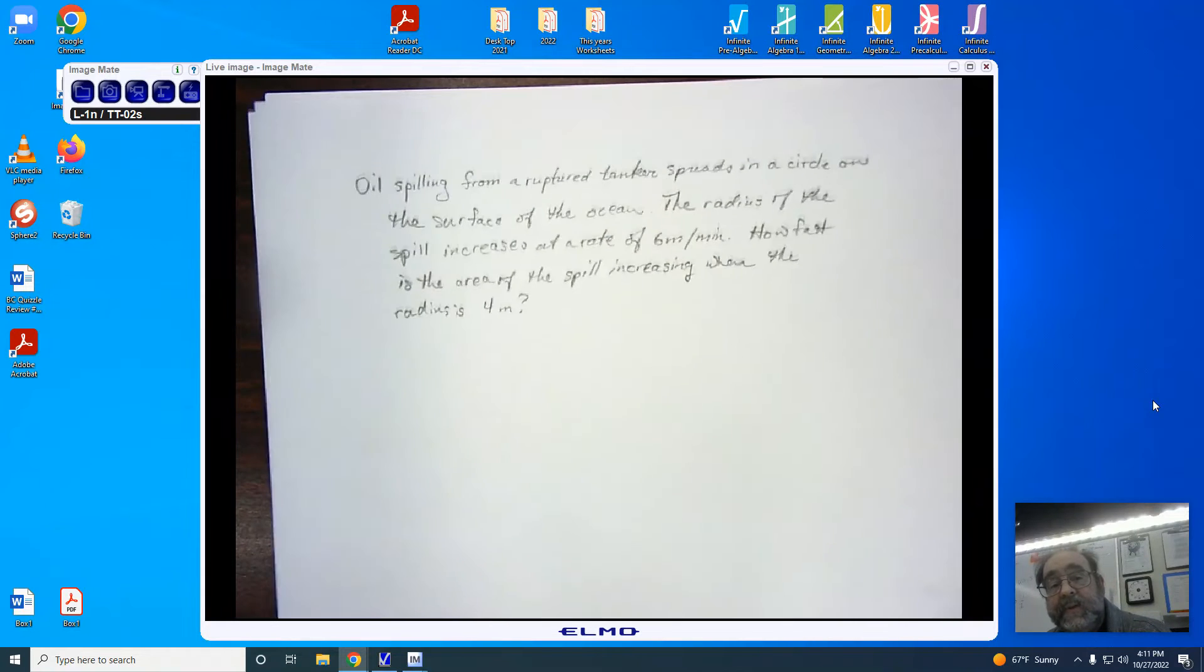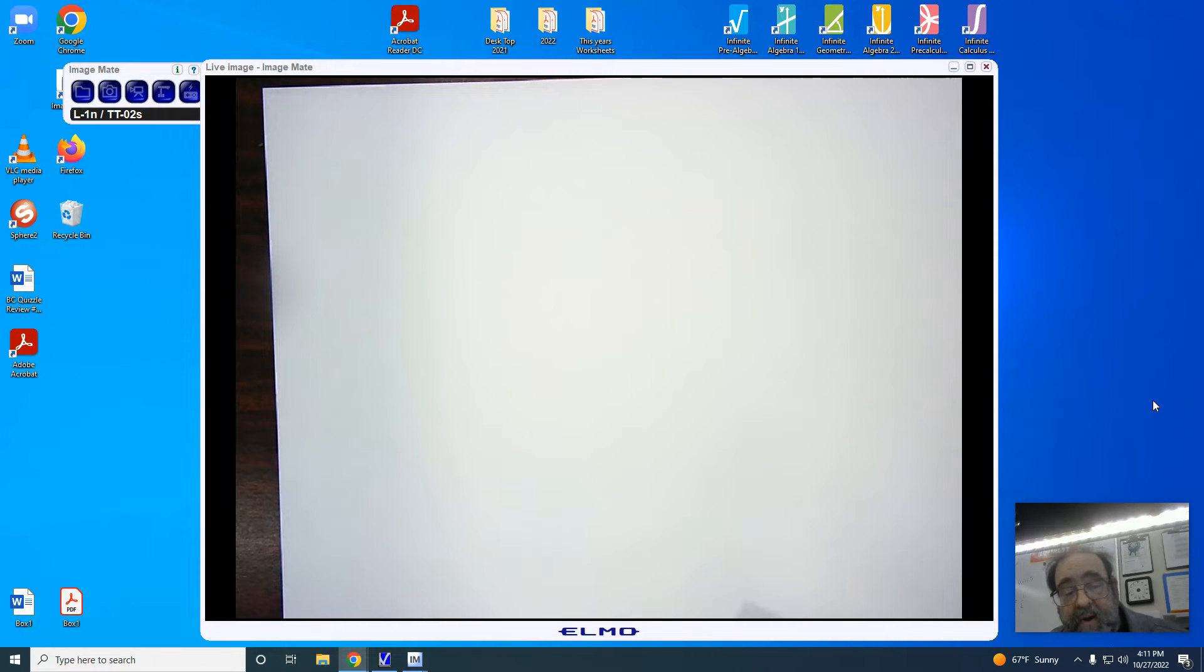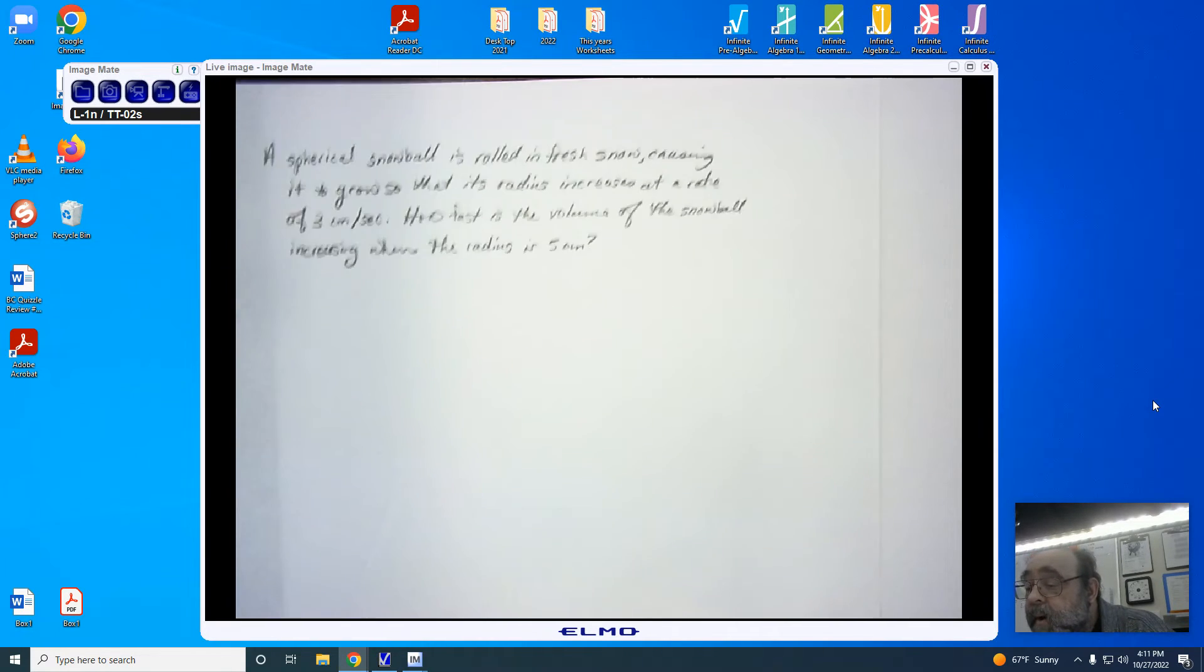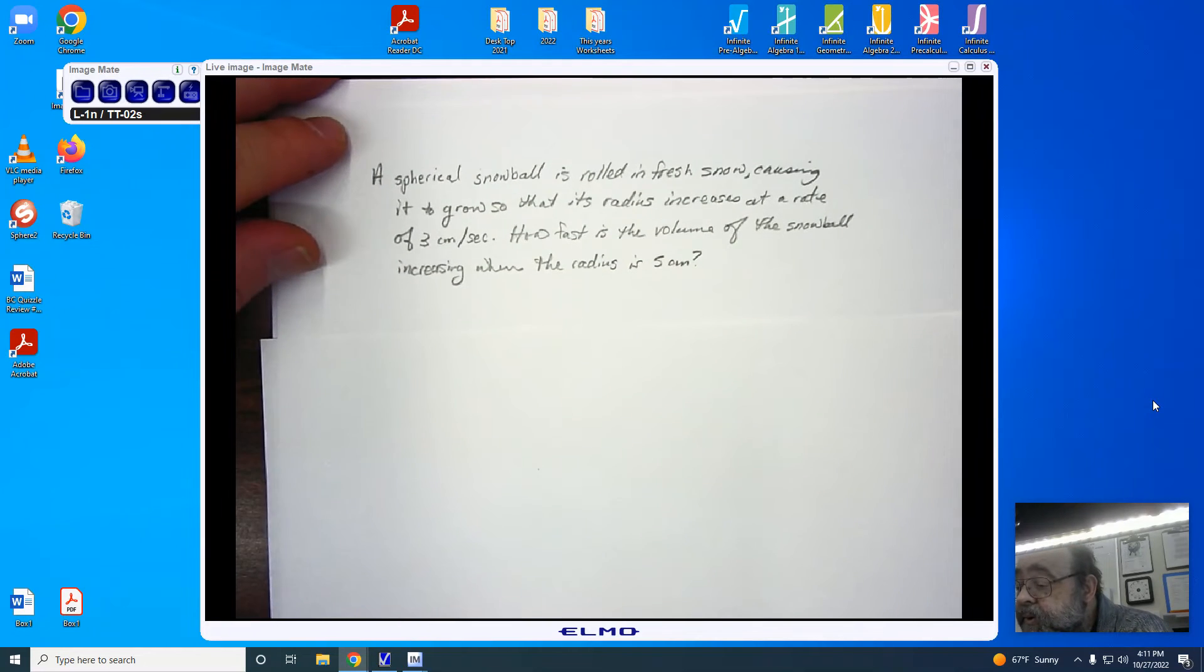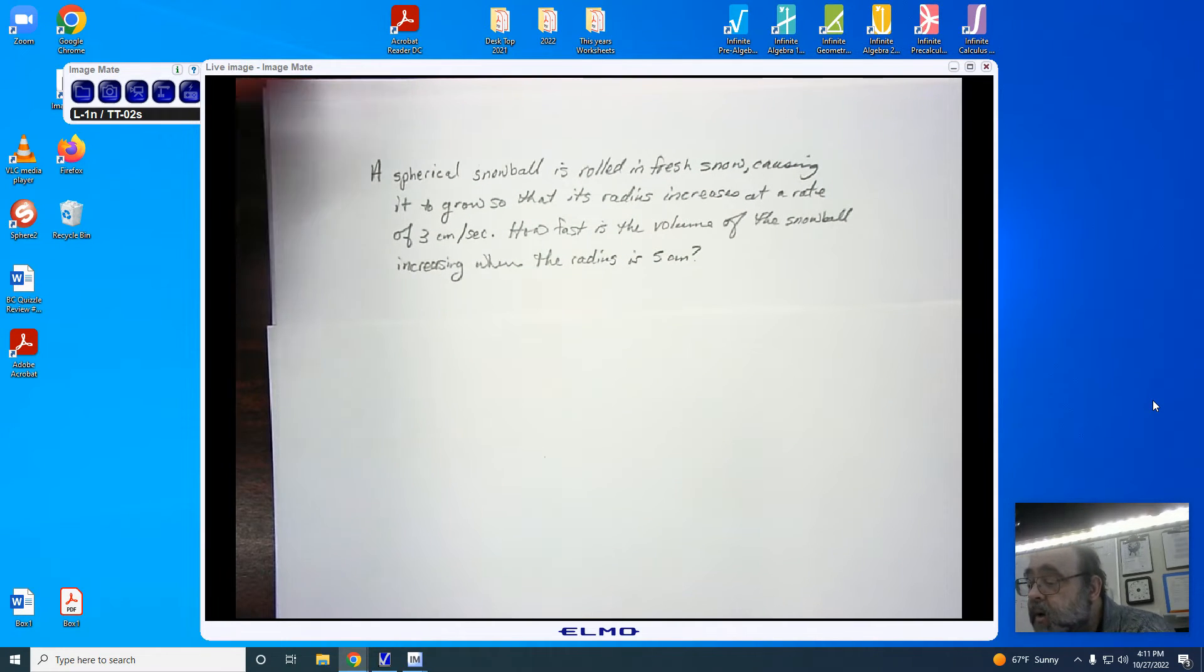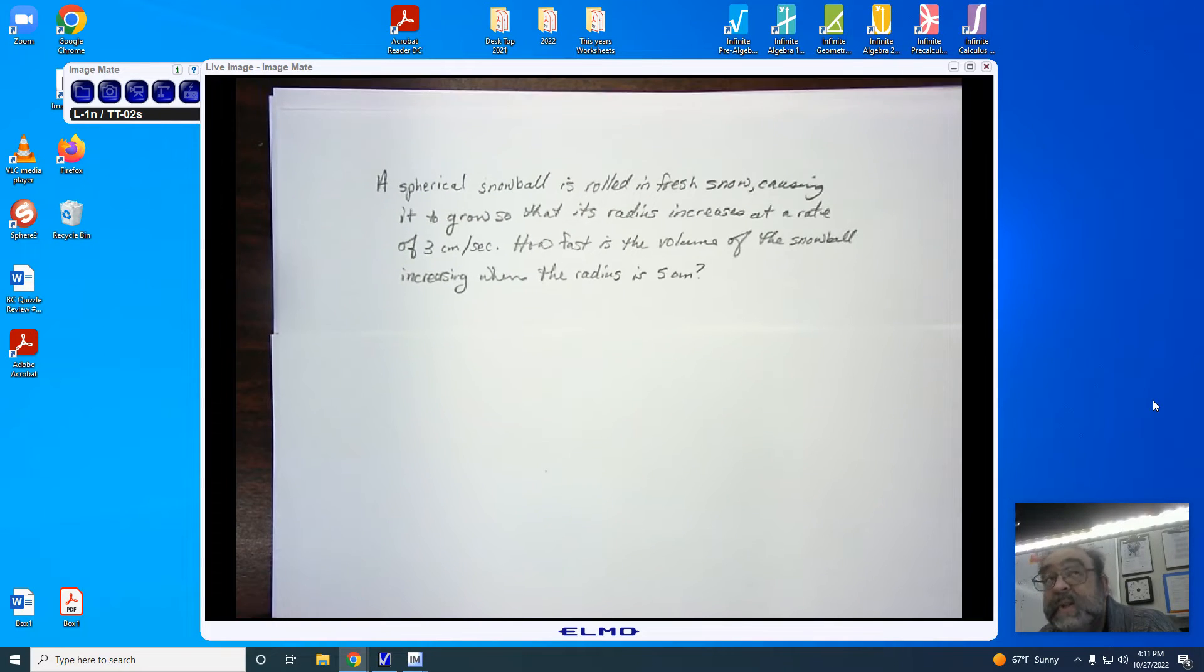Let's go ahead and take a look at the second one, that involving a sphere. So here is our second example. A spherical snowball is rolled in fresh snow, causing it to grow, so that its radius increases at a rate of 3 centimeters per second.